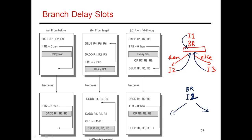Now consider moving I2 into the branch delay slot. If I go along the then path, I'm doing something useful — I execute I2 in advance, then start executing I4 and so on. If the then part is taken 80% of the time, then 80% of the time I'll do something useful in the branch delay slot. The remaining 20% of the time, going along the else path, I execute I2 and then start executing I3 — executing one instruction I was never meant to execute. So 20% of the time I'm wasting one cycle, but 80% of the time I'm not penalized by having encountered this branch.